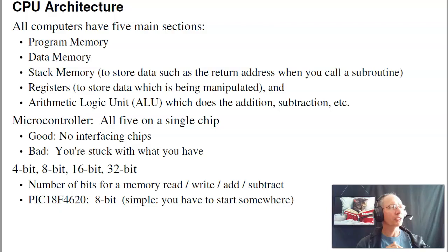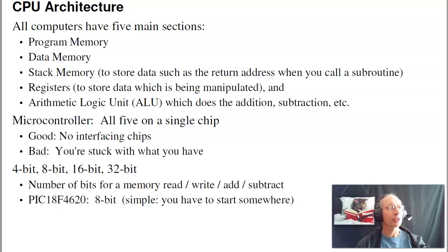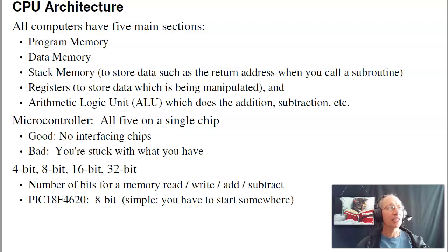There are also different types of processors termed 4-bit, 8-bit, 16-bit, and 32-bit — that refers to how many bits you get at a time when doing a memory read/write or addition. The PIC we're using is an 8-bit processor. It's simple; you have to start somewhere. The 16-bit and 32-bit processors are almost the same price but have a much steeper learning curve. This is the first course many of you have seen for programming directly on hardware, so we start with a fairly simple 8-bit processor. The concepts all apply — whatever we learn here applies to 16-bit and 32-bit. But with the PIC, we'll be able to do things like build a roulette wheel within the first two weeks.